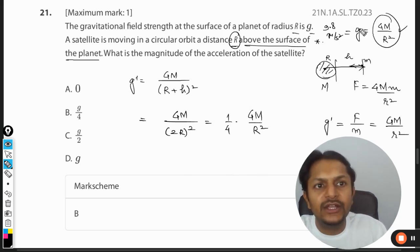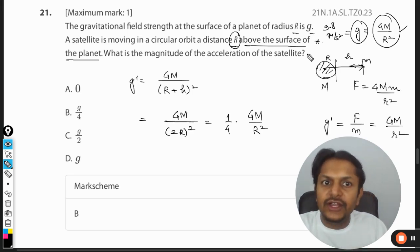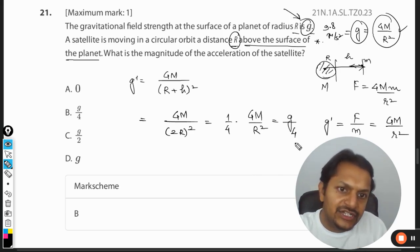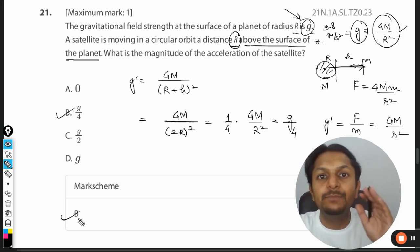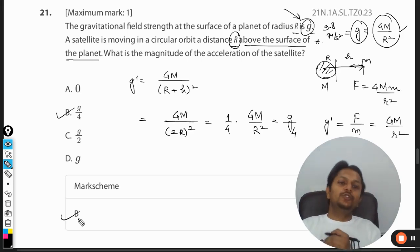Now GM by r square can be easily substituted as acceleration due to gravity at surface of the planet, which is already given in the question. So this is g by 4. And so the answer will be B. This is how we do this question.